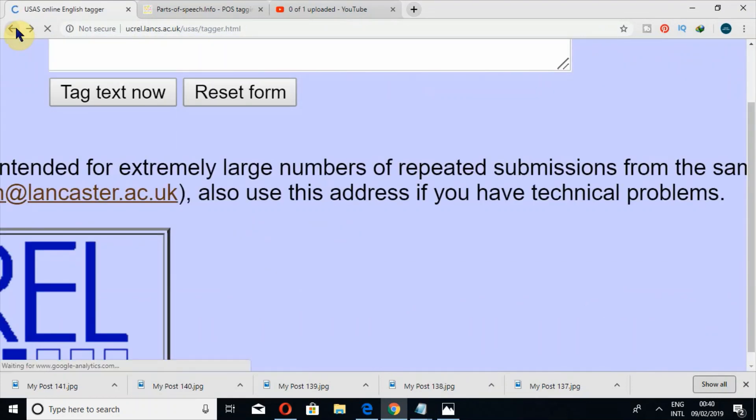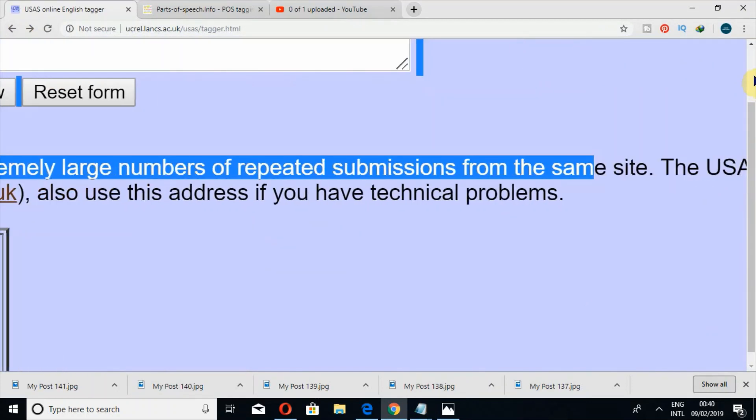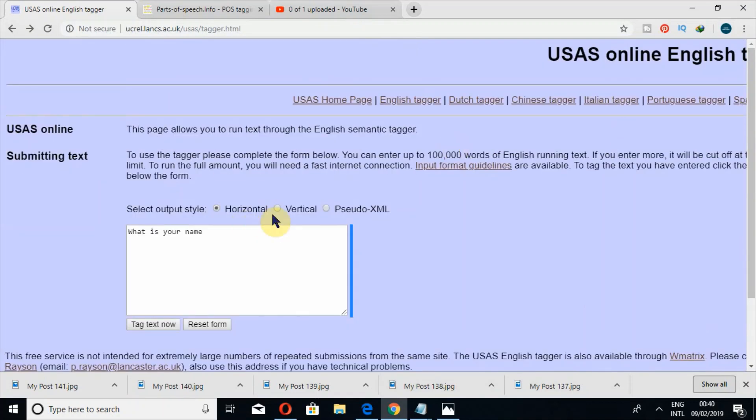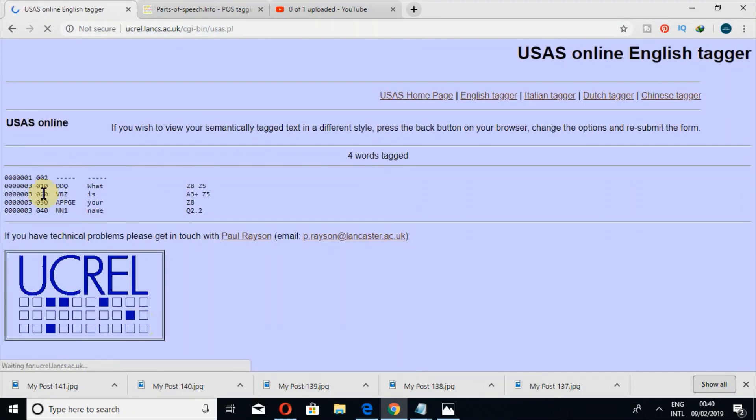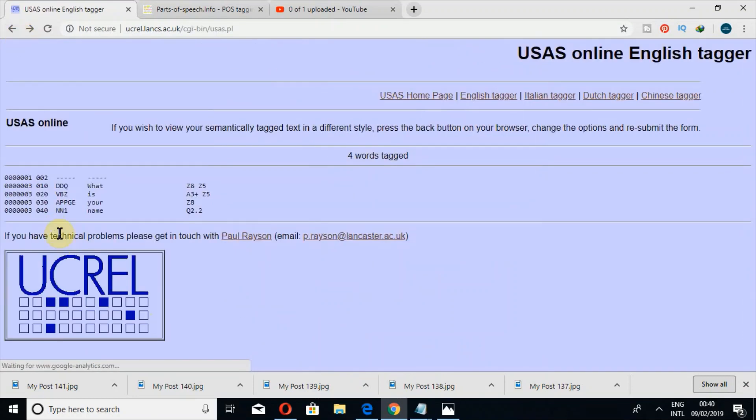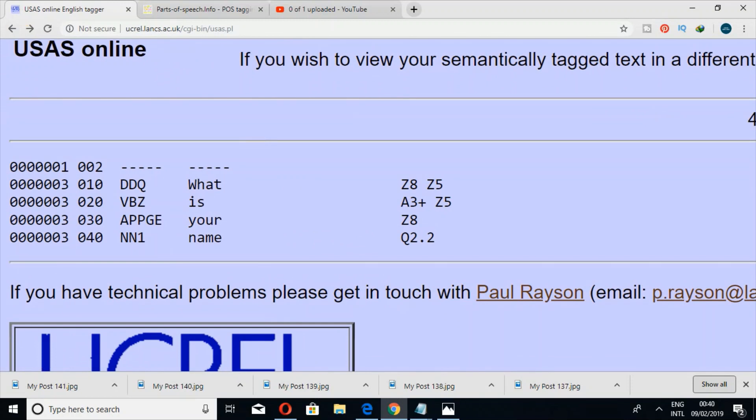Now if I want to tag the same data in vertical form, once again I have to select vertical and Tag Text Now. In this way, it will tag our data according to vertical form.